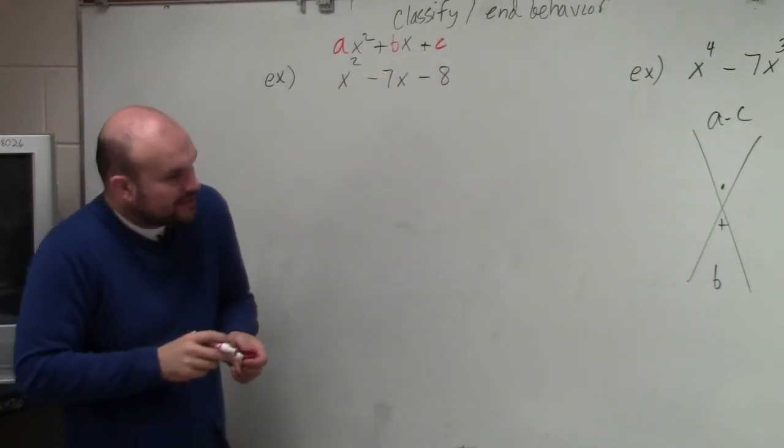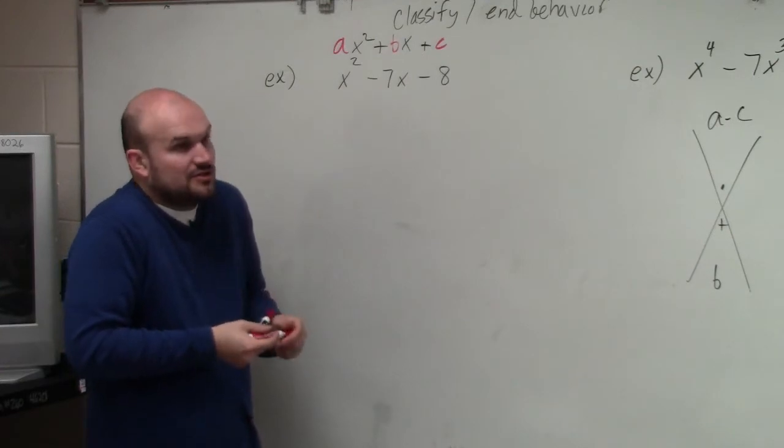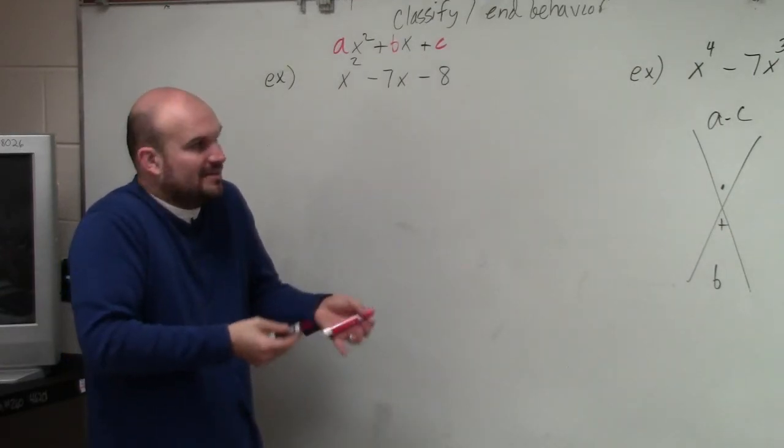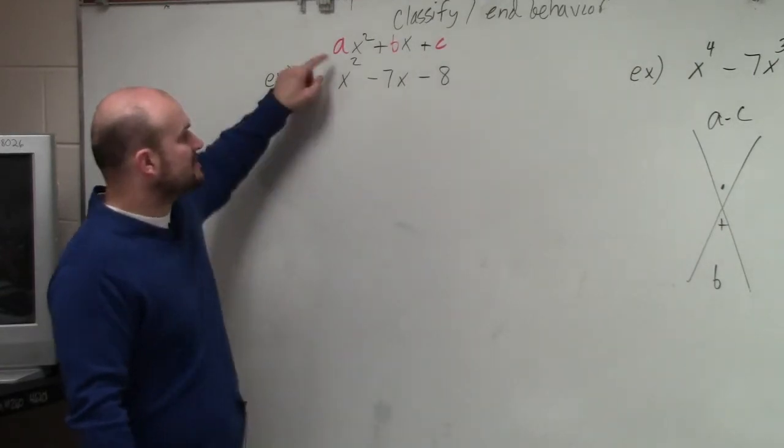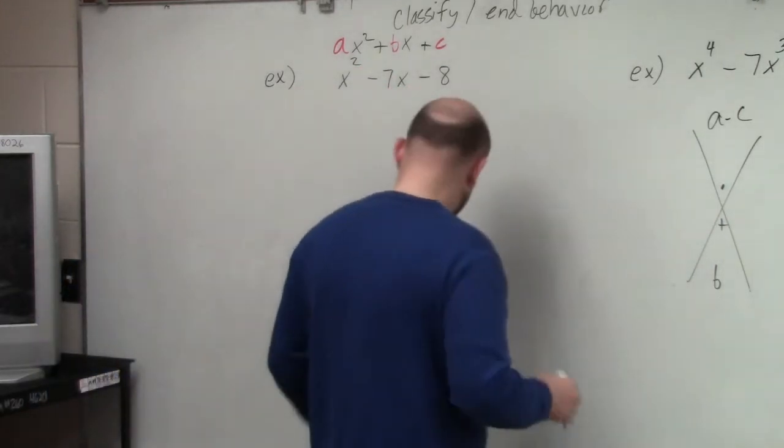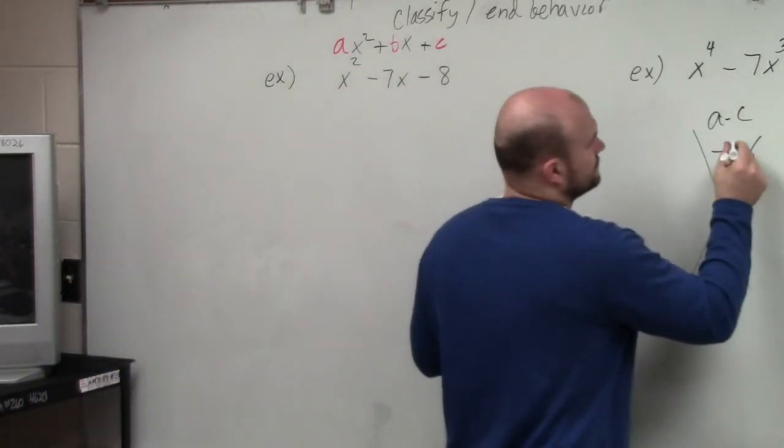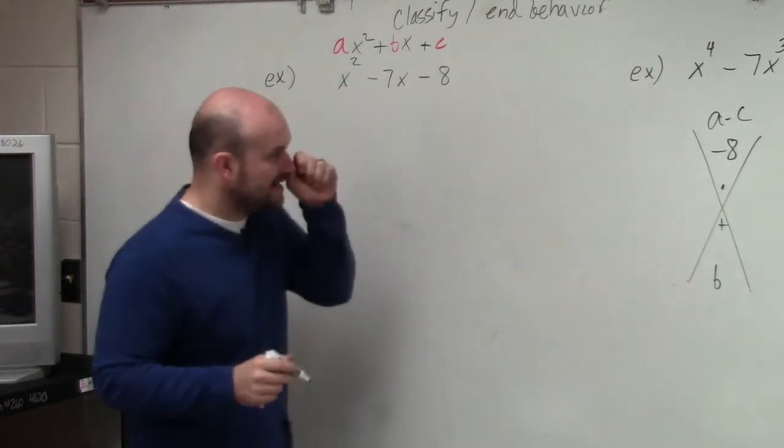Now, when we were doing quadratics, the first thing I always told you was identify a, b, and c. Make sure you know that. So in this case, you can see a is 1, c is negative 8, so we're going to write in negative 8, and then our b is negative 7.